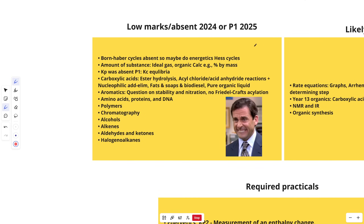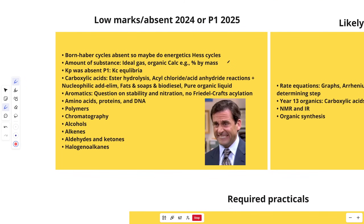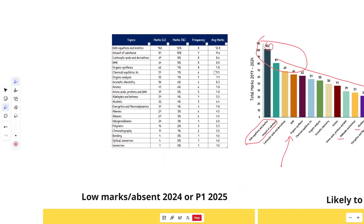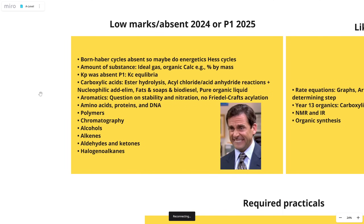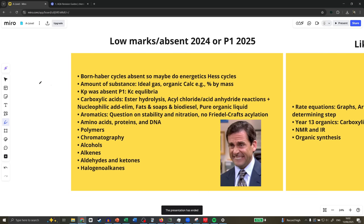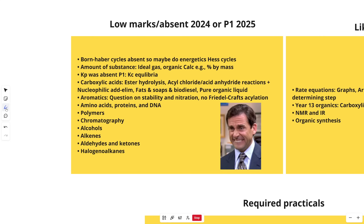Let's look at the predictions. Paper 2 is pretty hard to predict because Paper 1 has a lot fewer topics — Paper 2 is topic heavy. So let's look at what happened in Paper 1 2025, things that can potentially come up in Paper 2, as well as what happened last year in Paper 2 and Paper 3.